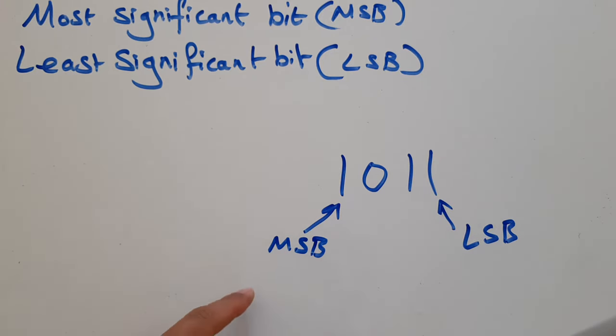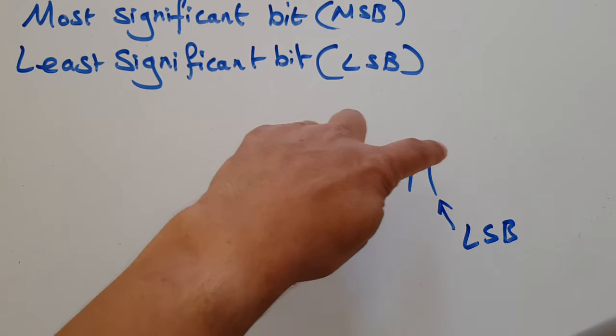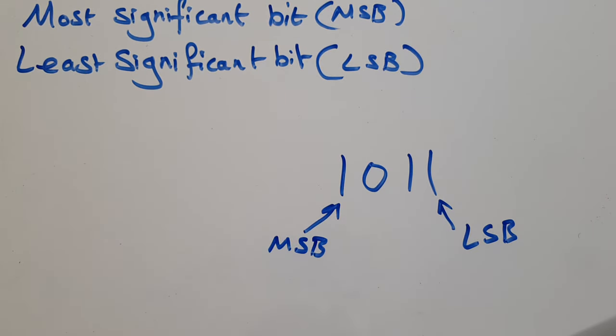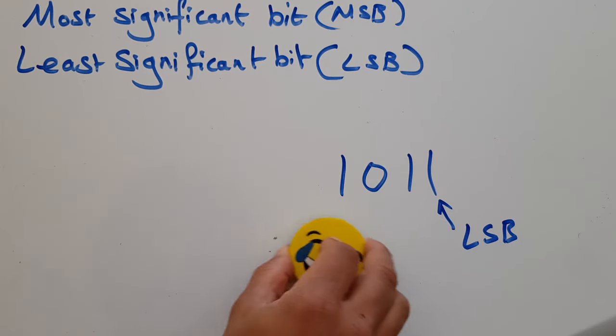So why do I care about having the MSB and an LSB? These make sense when you start to do things like sine and magnitude and 2's complement. These are systems for representing negative numbers in binary. But okay well that's 4-bit. What if I go bigger?